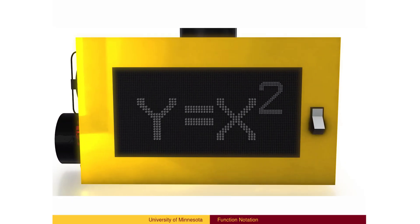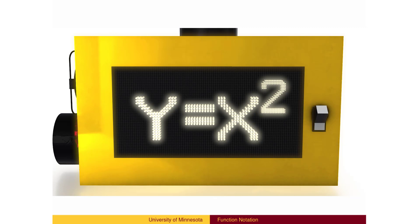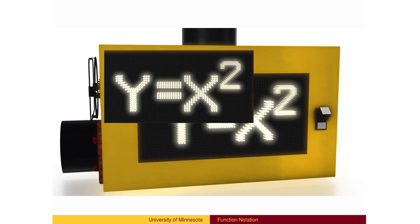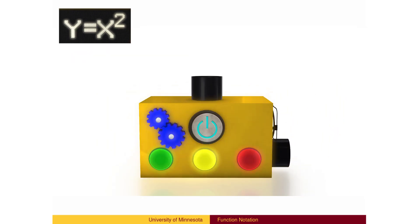A function, such as the function depicted here — the function which squares a number, associated with the equation y equals x squared — has three main parts. First, the function has a place to receive an input, for example, 2.